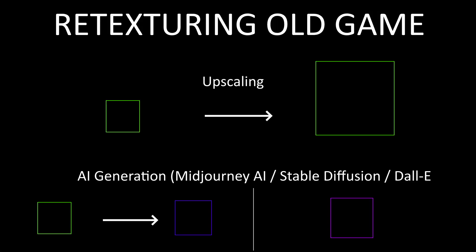Hello there! I wanted to make a video about retexturing old games. So far we could simply take an old game like Doom and upscale its textures to improve its quality. But with the rise of AI generators, which have become very accessible to us, I was wondering if we could simply replace those textures with newly generated ones.